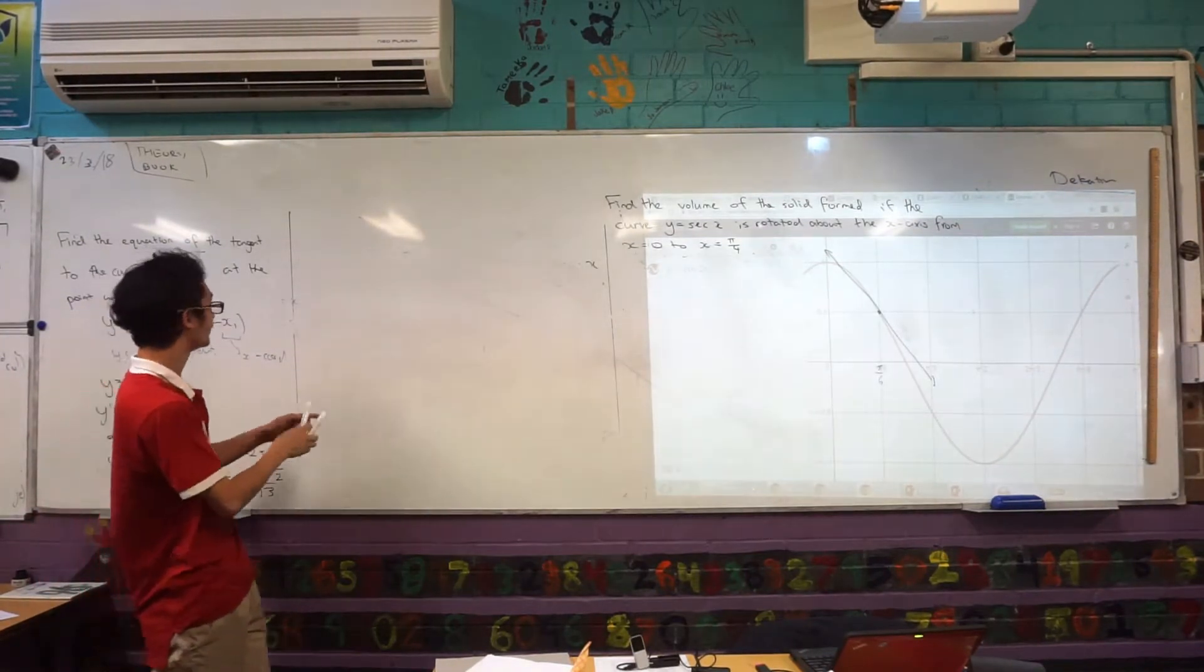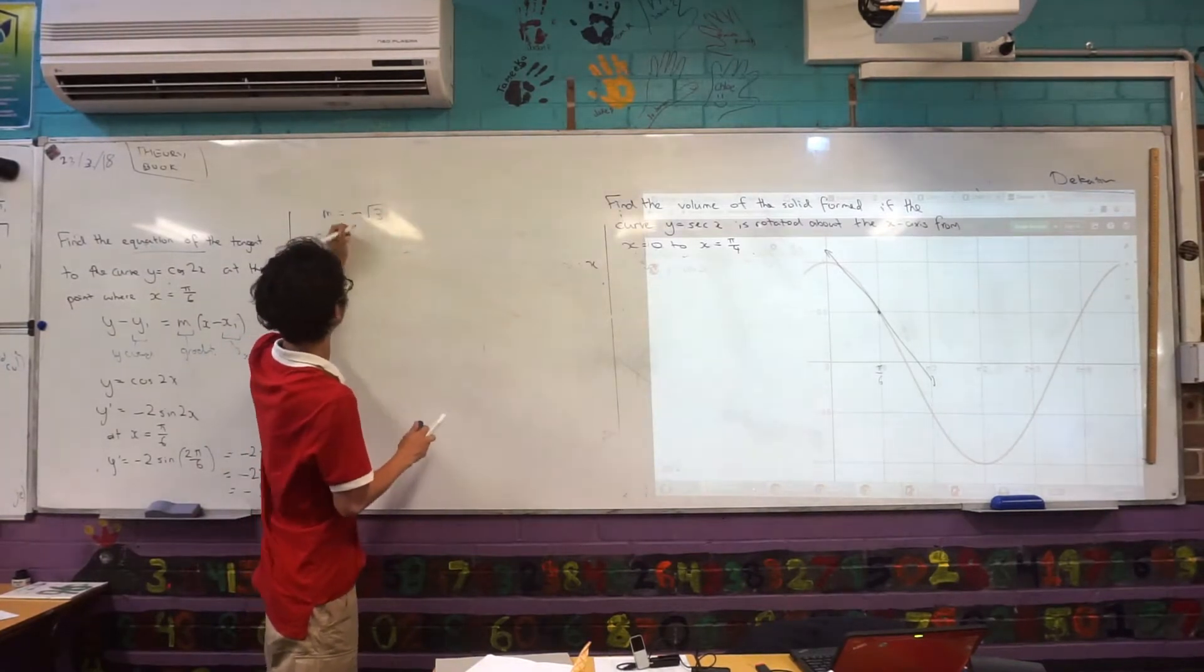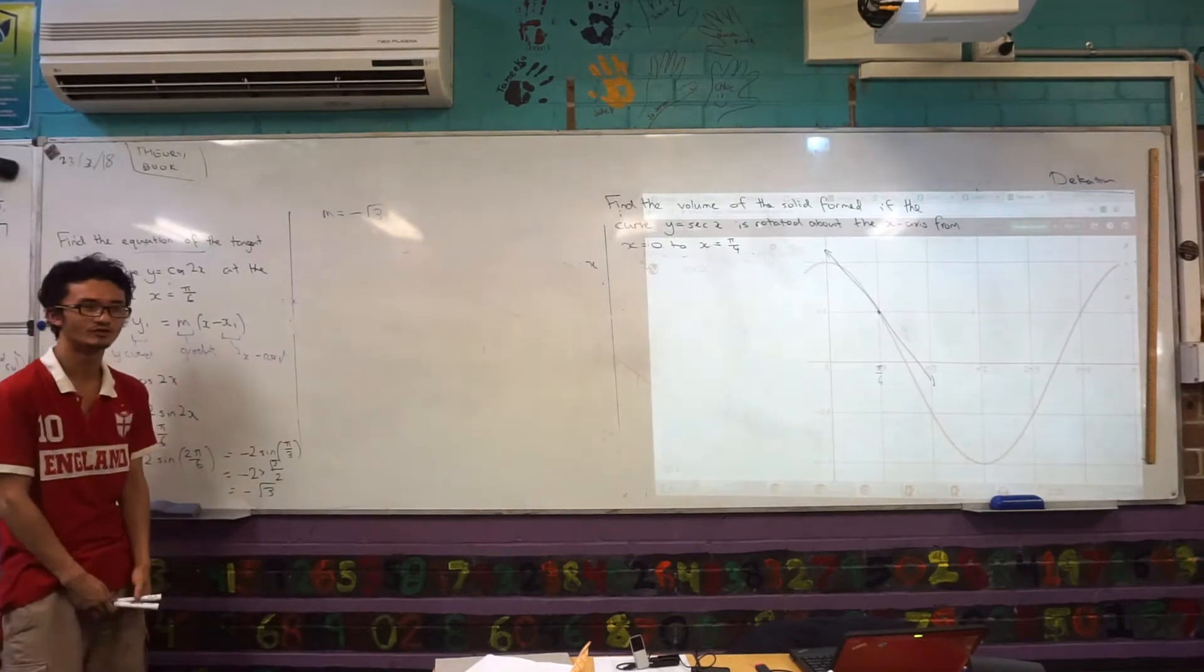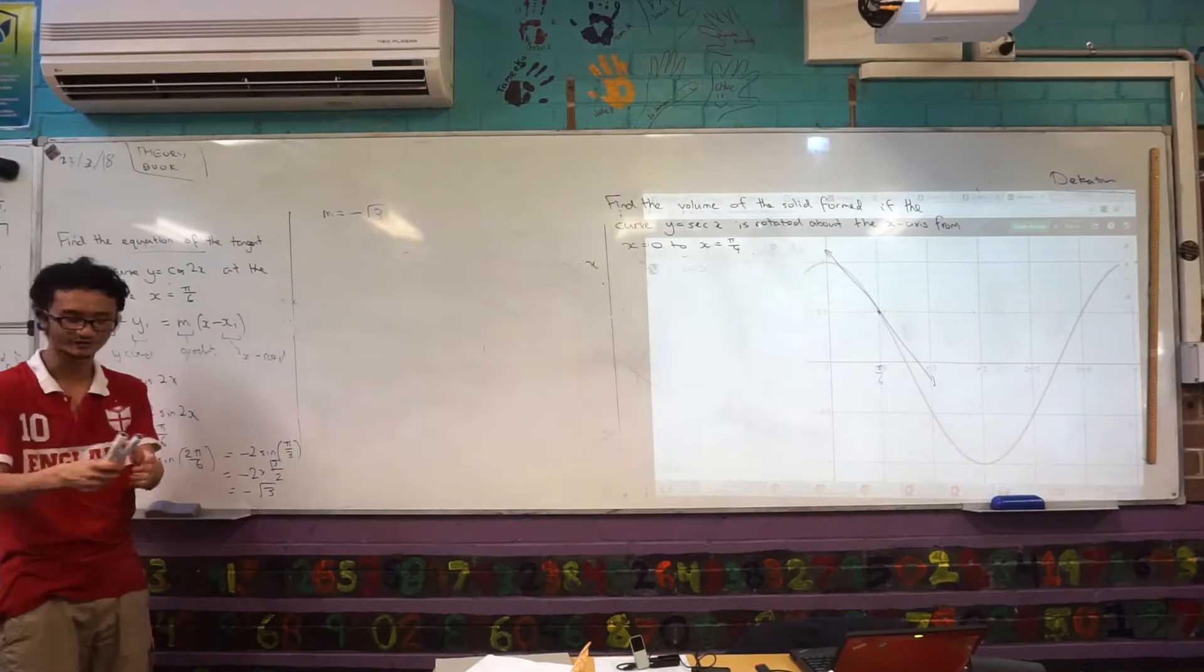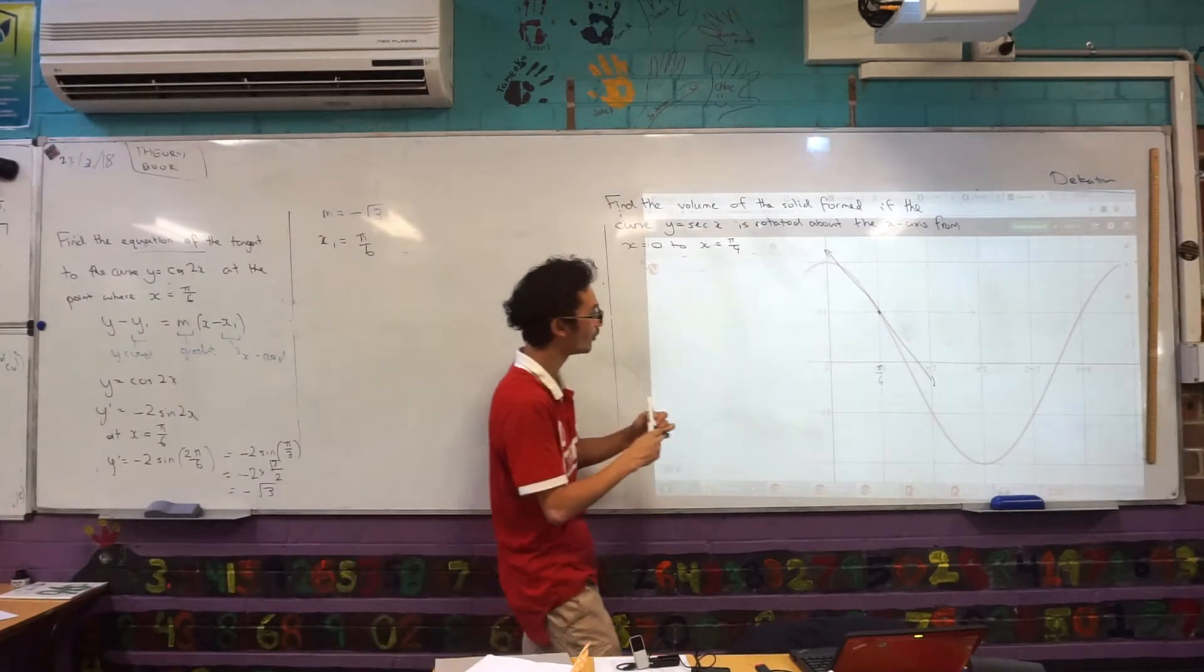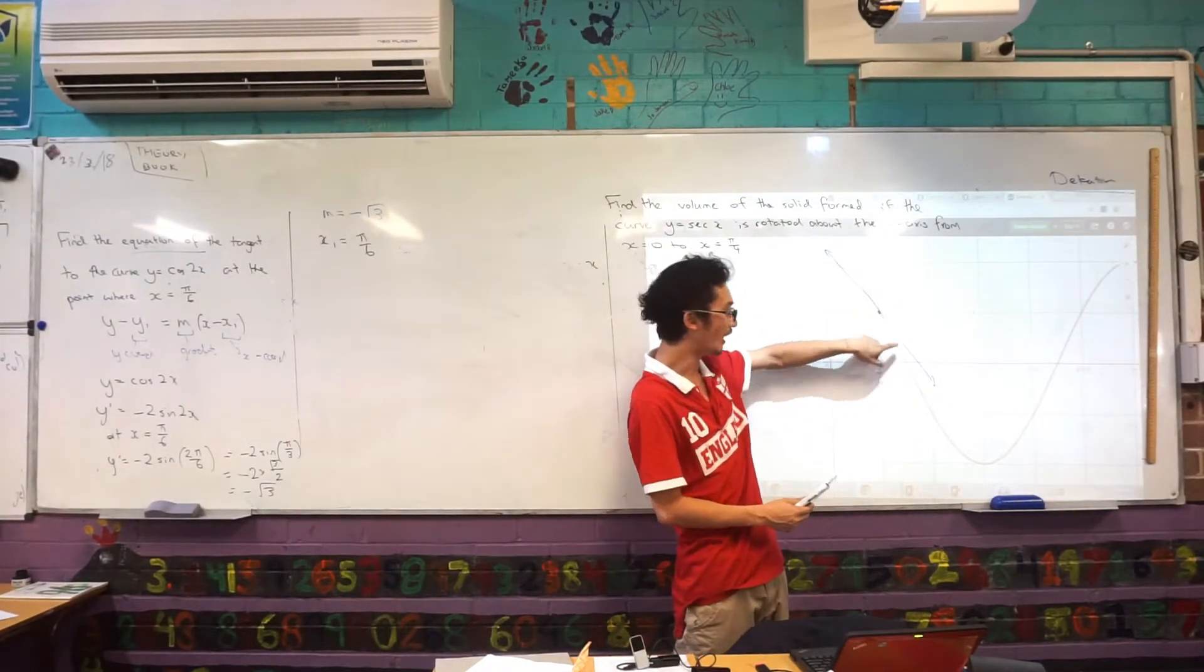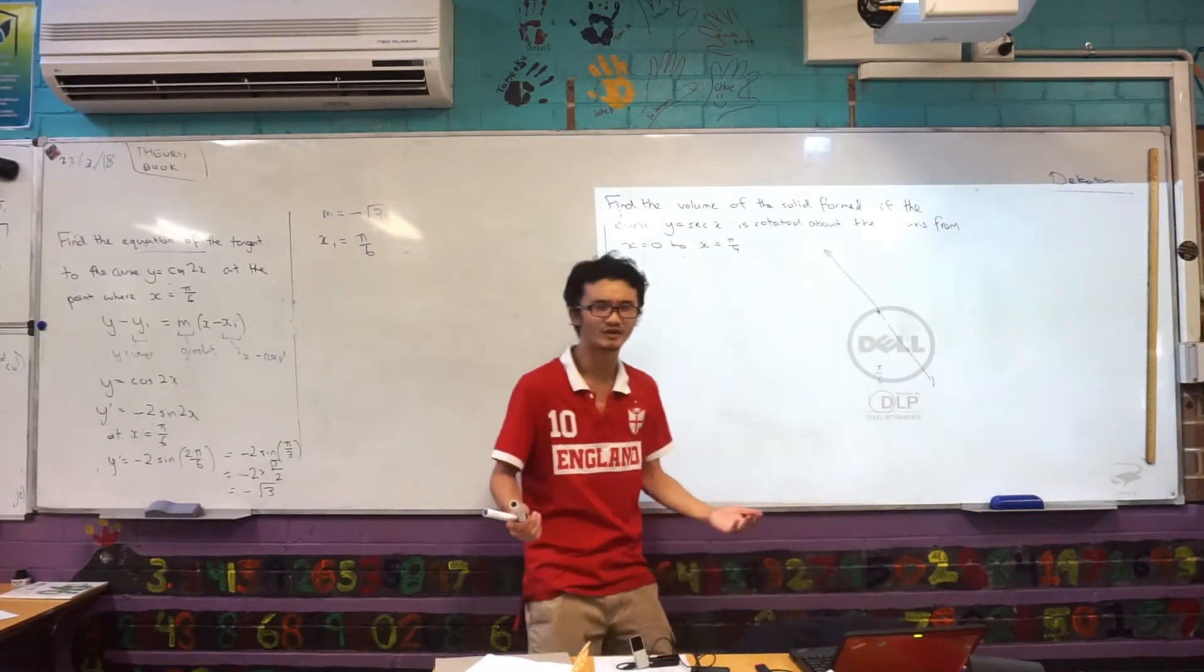So I know that my m now, I can fill that in. My m is negative root 3. Okay, what about x1 and y1 though? Do I know those values? No. Yeah, what's my x? π on 2. Yeah, so remember, these are just coordinates. And what coordinates are they? Well, the coordinates at where your graph is meeting the curve. I know that the x value is going to be π/6. How do I find the y value?